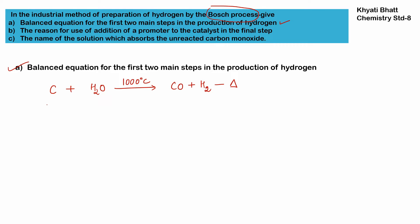The first reaction is when coke reacts with steam at 1000°C, giving a mixture of carbon monoxide plus hydrogen, known as water gas. This hydrogen is not in a free molecular state — it is combined with CO, and this combination of CO plus H₂ is what is known as water gas. So hydrogen is not free at this step.